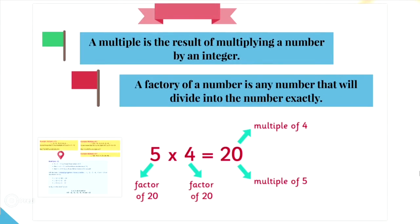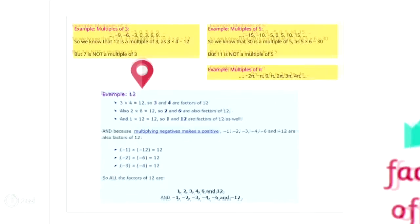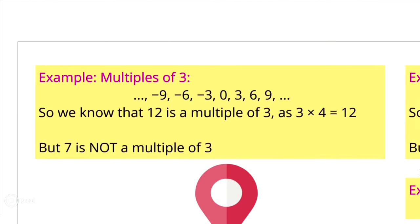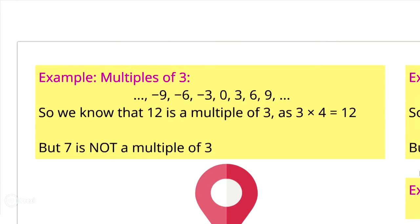Now we are solving some exercises. In exercise 1, you must find the multiples of 3. First you can write the first 3 multiples of 3. It means 3 multiplied by 1, then 3 multiplied by 2, and then 3 multiplied by 3. But you can also multiply 3 by negative integers. You get minus 3, minus 6, minus 9.